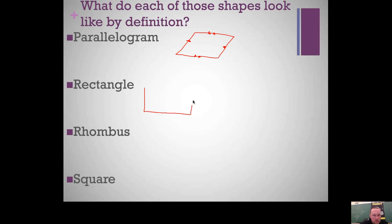What does a rectangle look like by definition? Just because it looks like a rectangle doesn't mean it is one. A rectangle is a parallelogram with four right angles, so I'm putting the four right angle marks on here. Notice I didn't add anything about parallel sides — that's because parallelograms already have opposite angles congruent, and if all four angles are 90°, it's automatically a parallelogram.